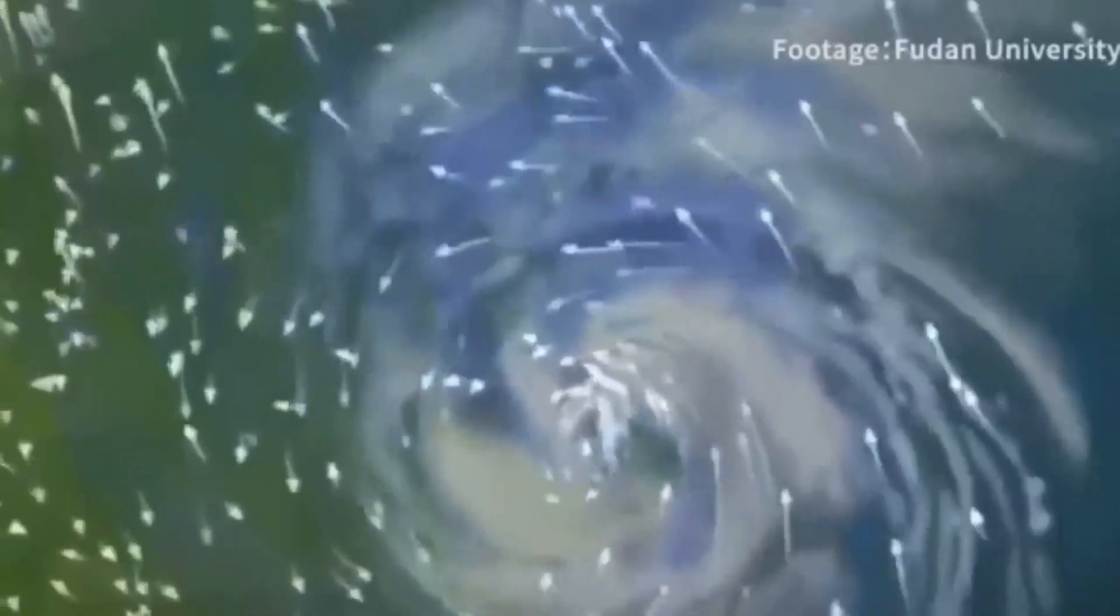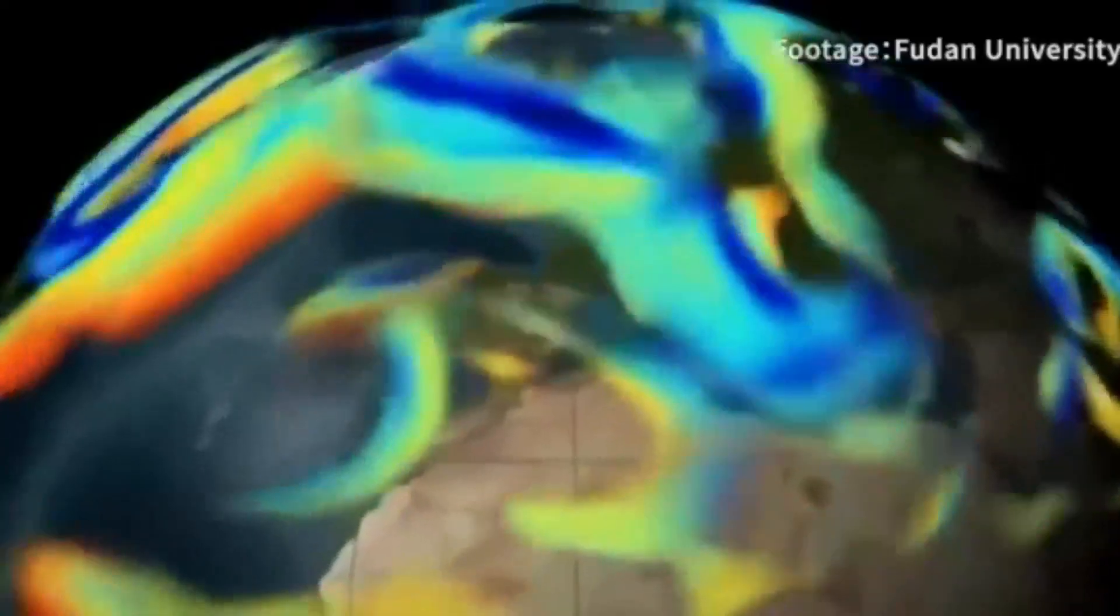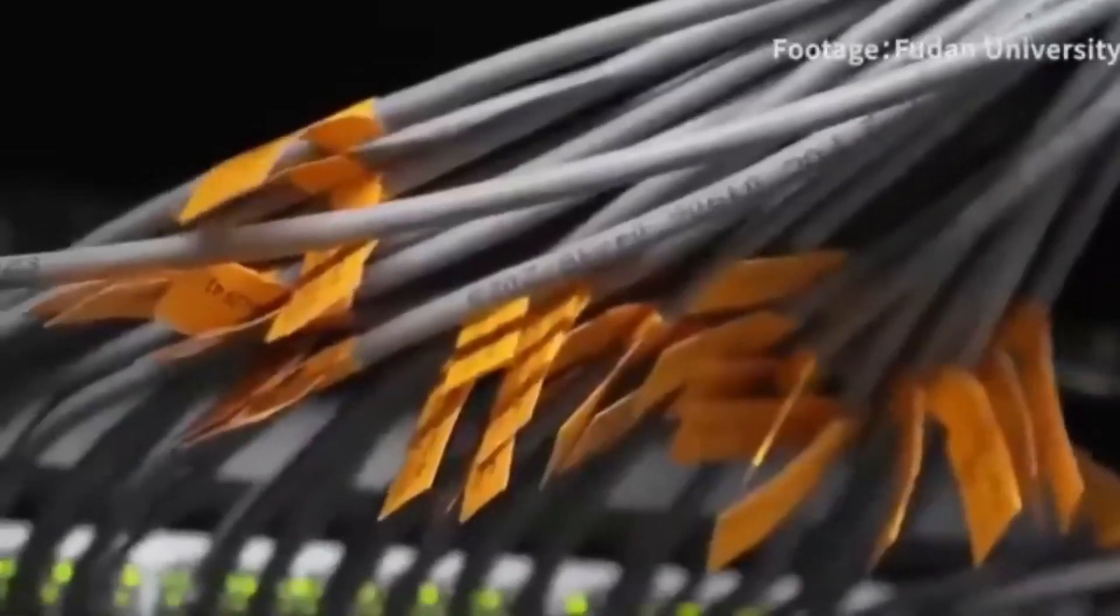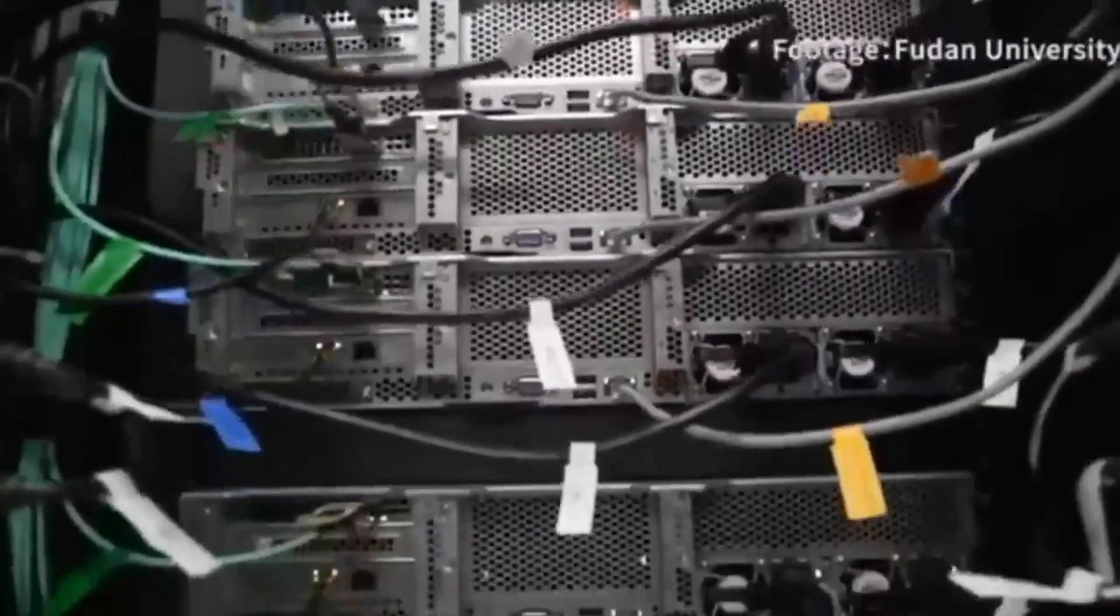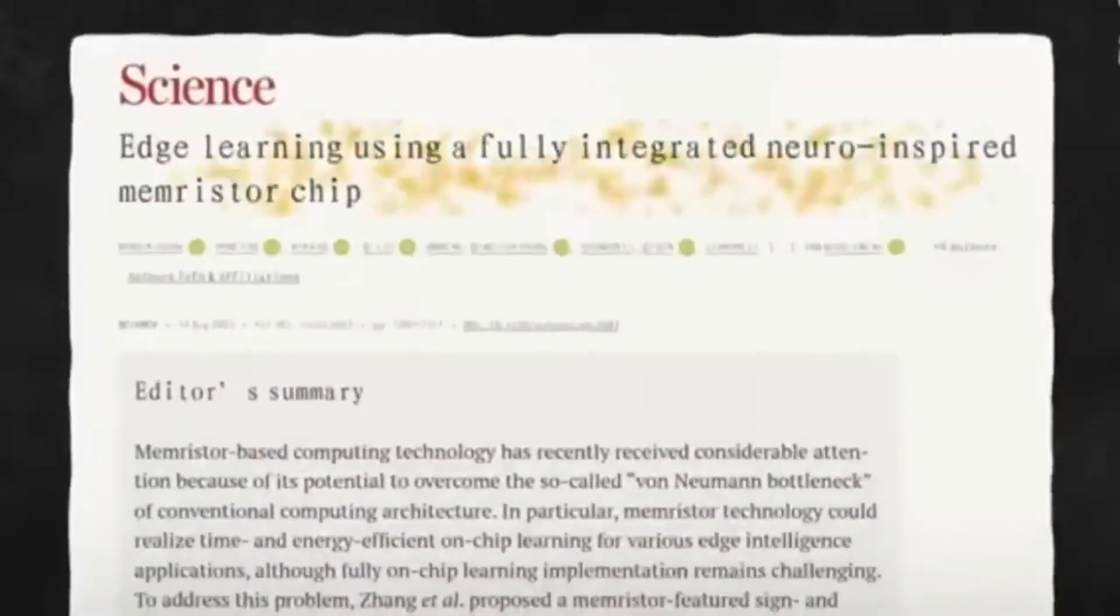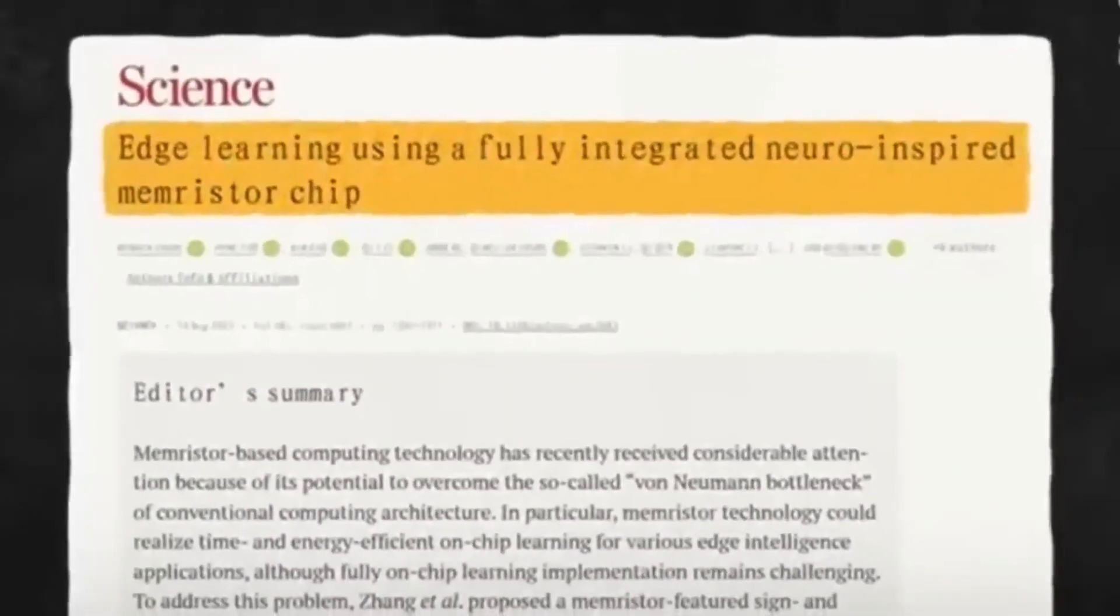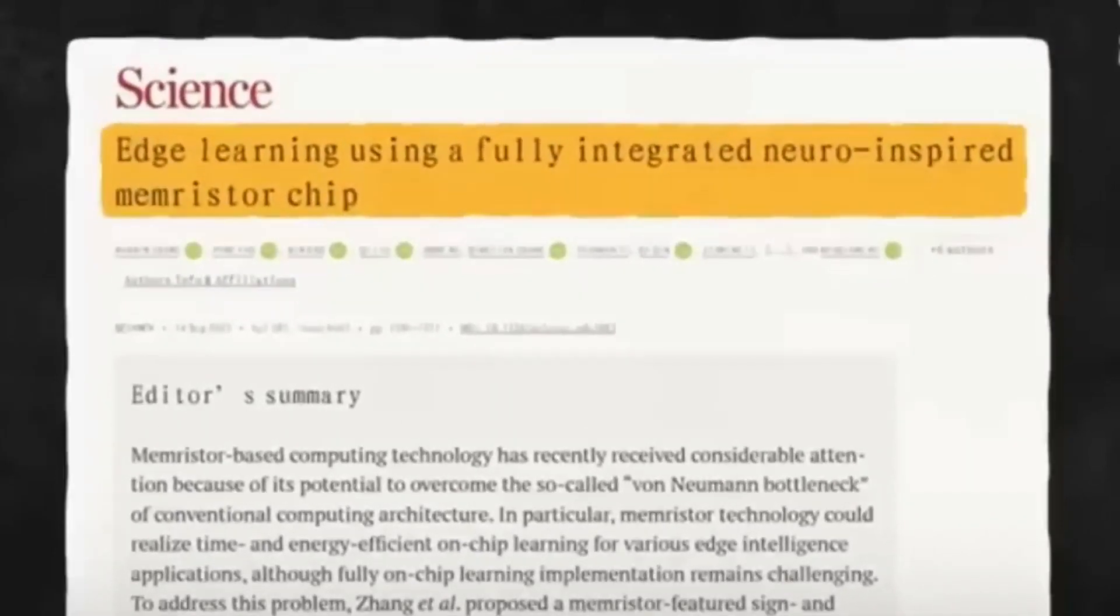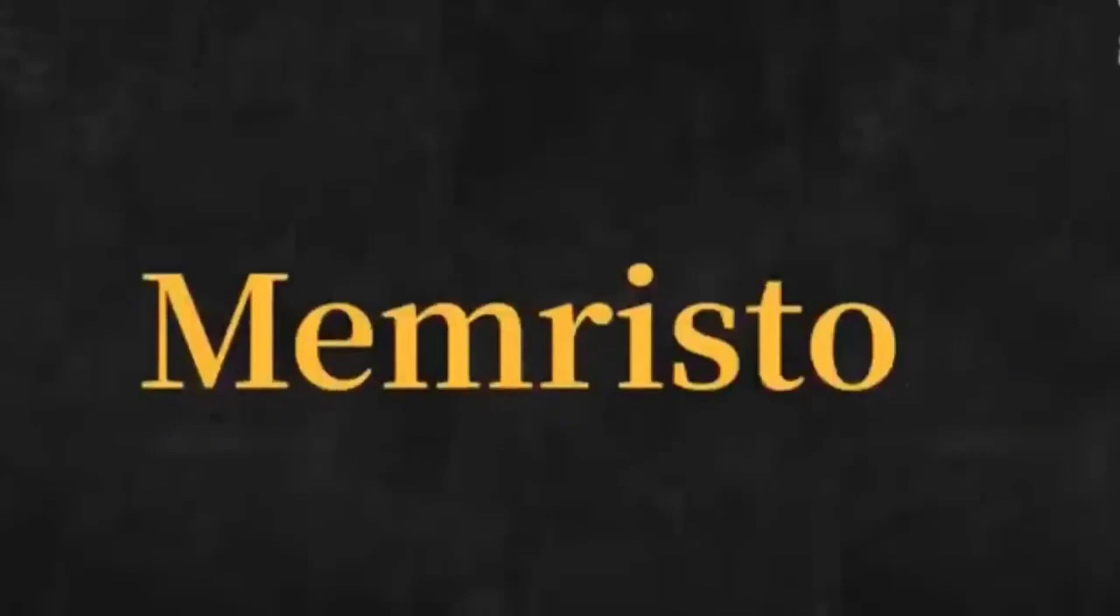This achievement has sent shockwaves through the tech world, and rightly so, as its implications are nothing short of staggering. You might be wondering how this technology affects you. It goes beyond making your devices run faster. It has the potential to transform fields like artificial intelligence. Traditional computers, with their binary on-off switches, have limitations in replicating the nuanced learning processes of the human brain. This is where memristor-based chips come into play.